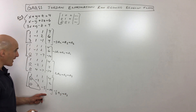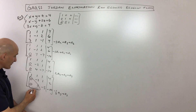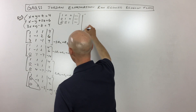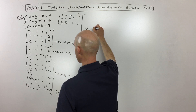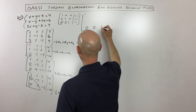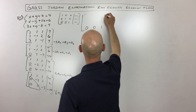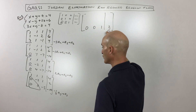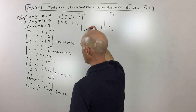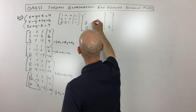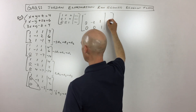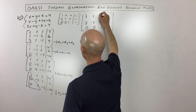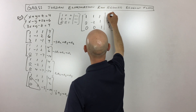So multiplying the third row by negative 1 fifth gives us 0, 0, 1, and 2. You can see that z is equal to 2. Copying down what else we have: 0, negative 2, 1, and 2. And we also have 1, 1, 1, and 4.